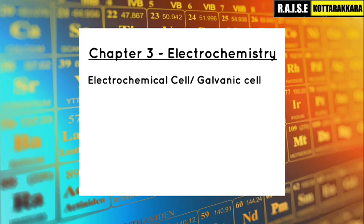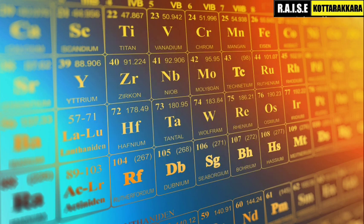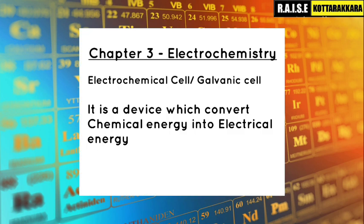What is an electrochemical cell? It is a device that converts chemical energy into electrical energy. Examples of electrochemical cells include batteries in clocks, watches, and UPS systems.